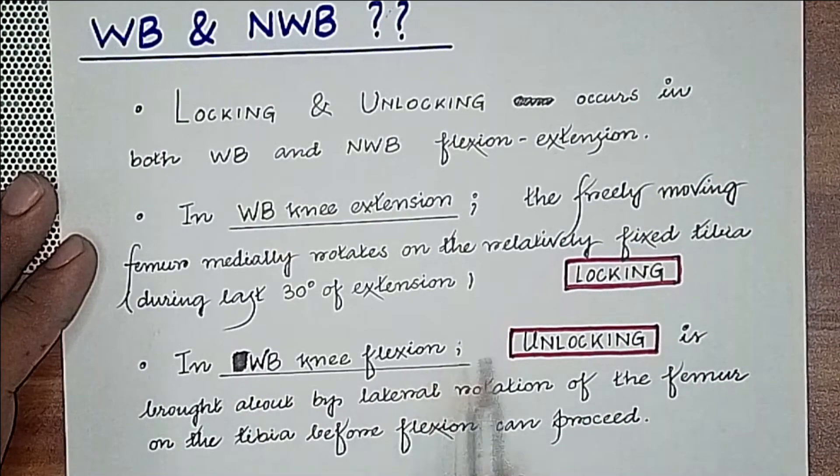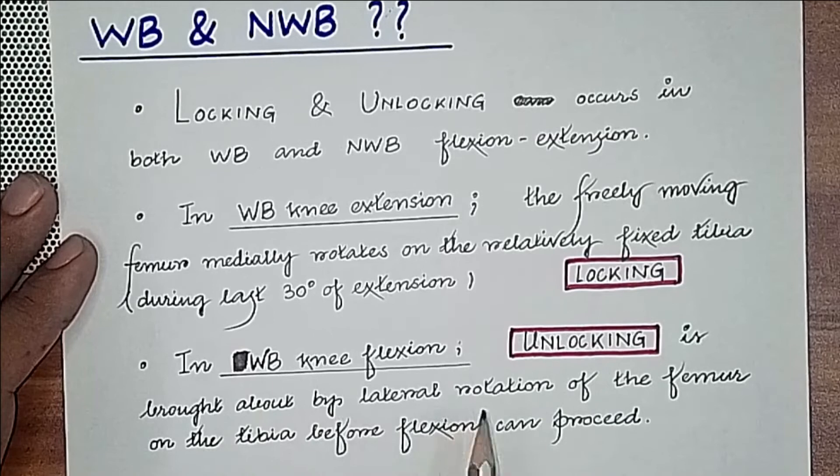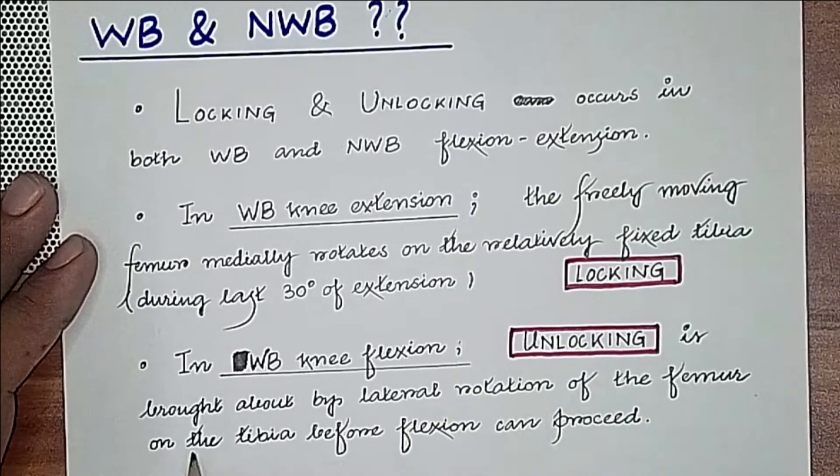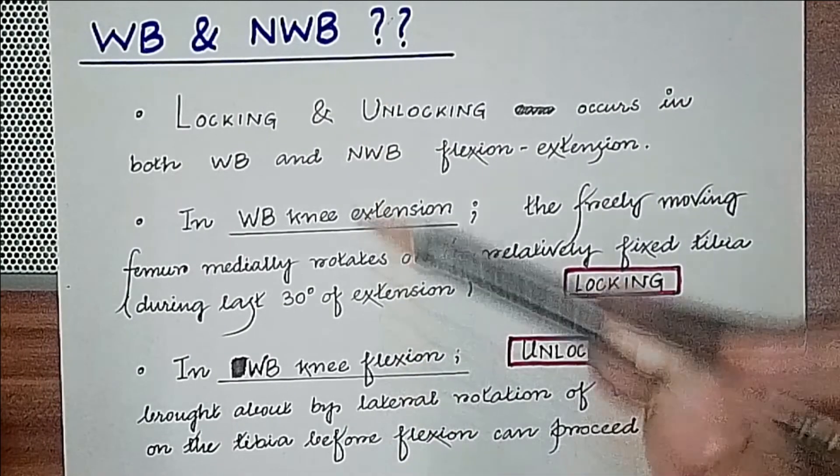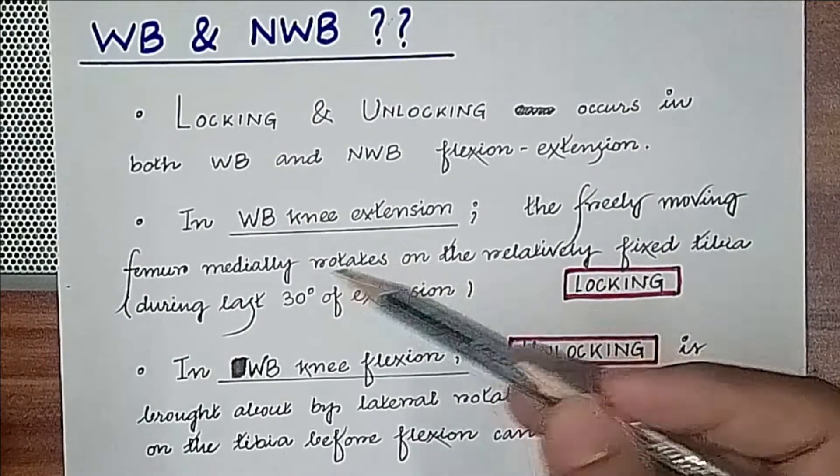In weight-bearing knee flexion, unlocking is brought about by lateral rotation of the femur on the tibia before flexion can proceed. It is the opposite rotation of non-weight bearing knee flexion and extension.